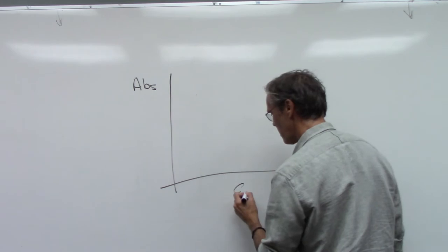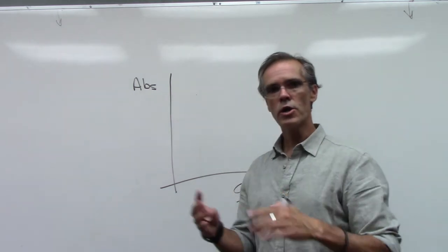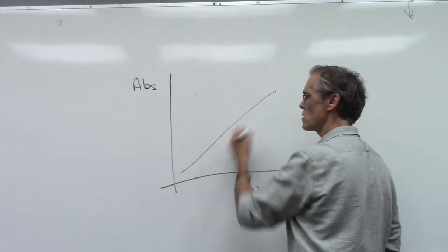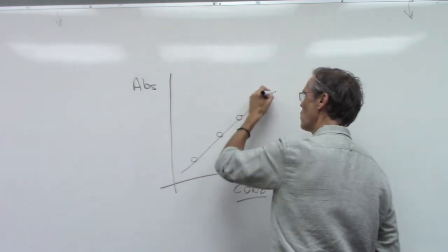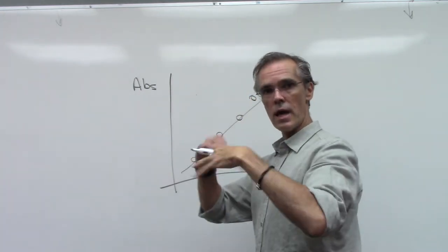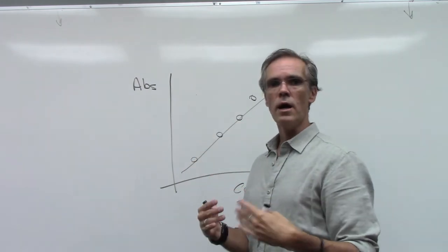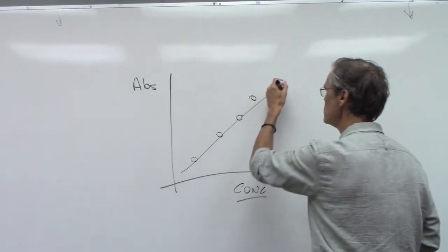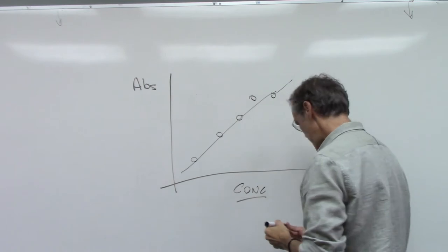So when we have this calibration curve, we have the absorbance at a certain wavelength, depending on what you're measuring, and then we have a correlation with the concentration. Most of the time the correlation within certain limits will be linear.